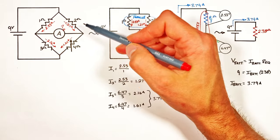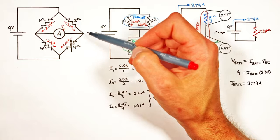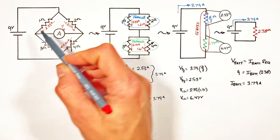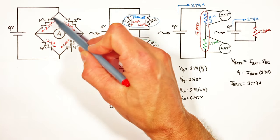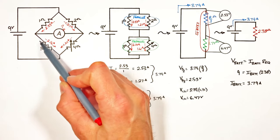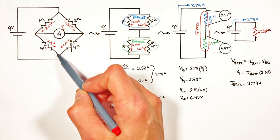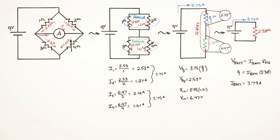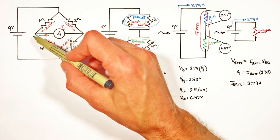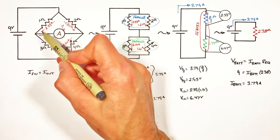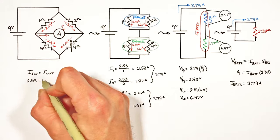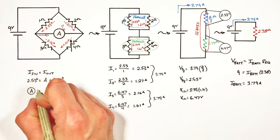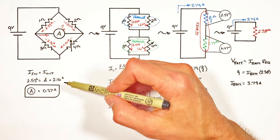We can do this problem mostly without getting caught up in the junction rule and loop rule, but the catch is right here: looking at this junction, there's 2.53 amps coming in through the 1 ohm resistor, but moving out there's only 2.16 amps — meaning some current must pass through the ammeter. The junction rule says total current into a junction must equal total current out, so 2.53 amps equals the ammeter current plus the current through the 3 ohm resistor, giving us 0.37 amps through the ammeter.